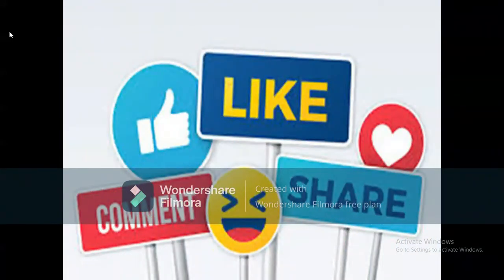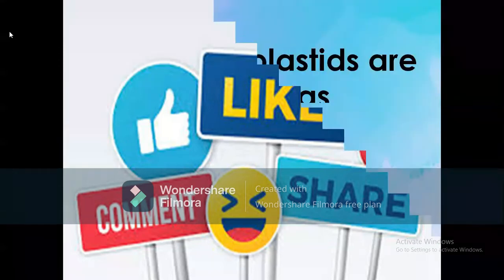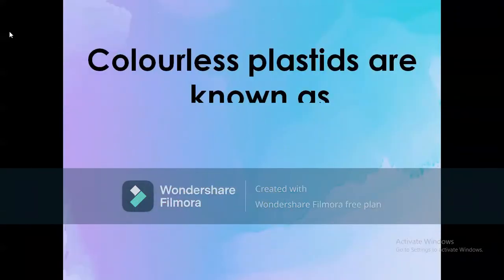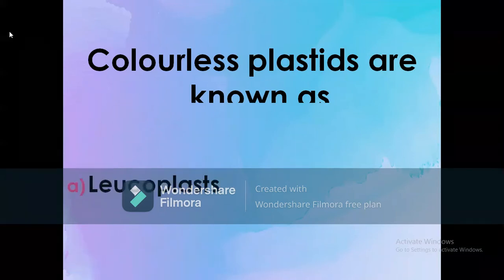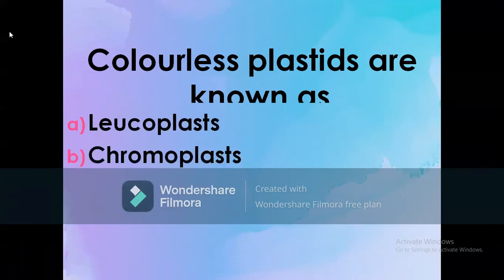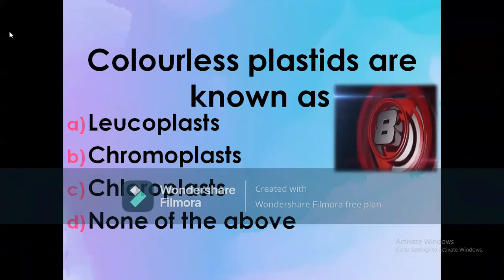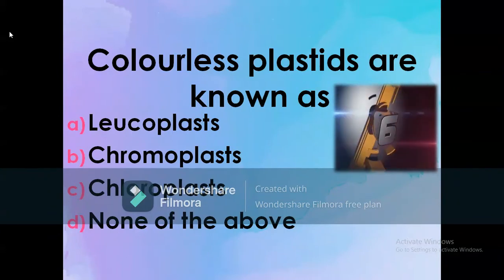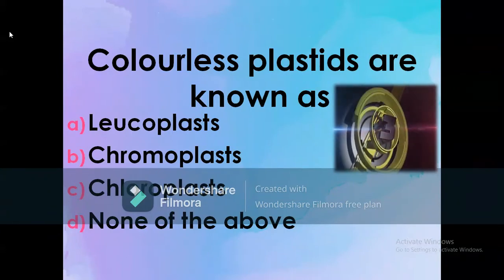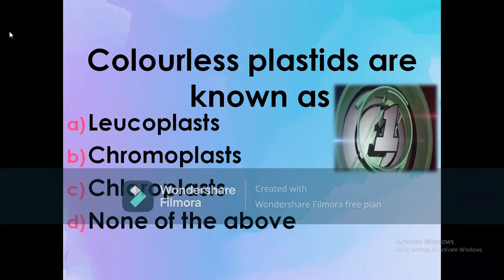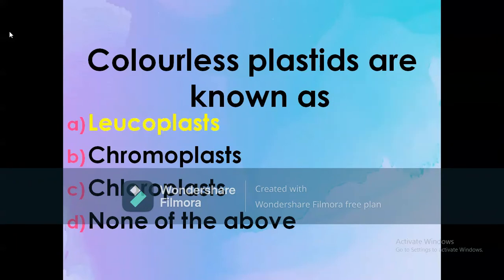Like, comment and share. Colorless plastids are known as: A) Leukoplast, B) Chromoplast, C) Chloroplast, D) None of the above. The correct option is A: Leukoplasts. Colorless plastids are known as leukoplasts.